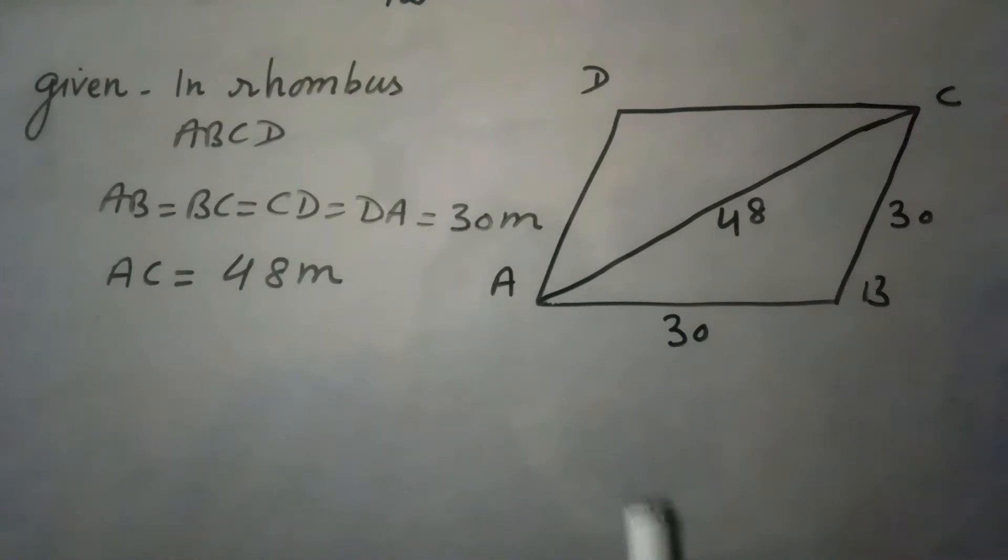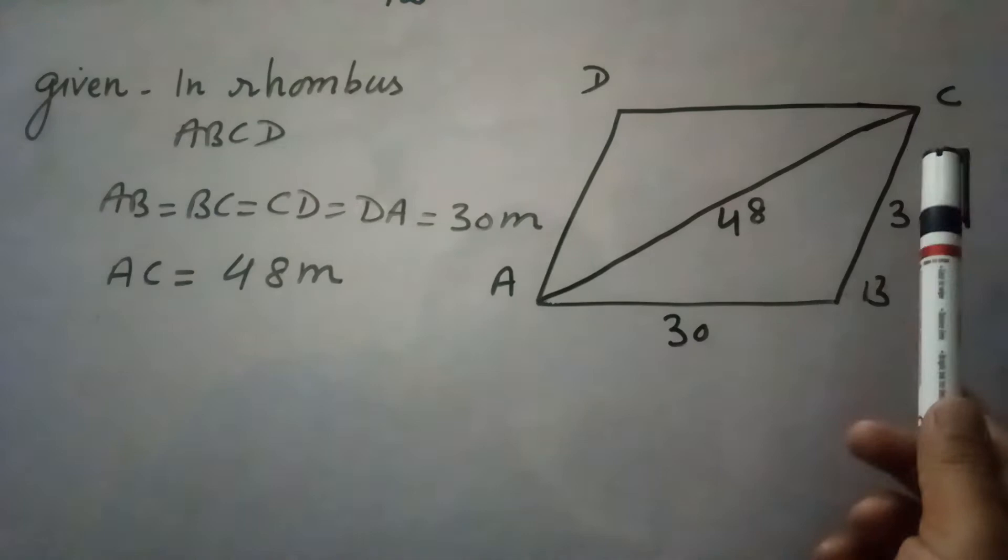To solve this, we will find the area of this rhombus and then divide that area by the number of cows, which is 18. For finding the area, we will use Heron's formula. First we find the area of triangle ABC, and because the diagonal of a rhombus divides it into two triangles of equal area, by finding the area of triangle ABC and doubling it, we can find the area of this rhombus.